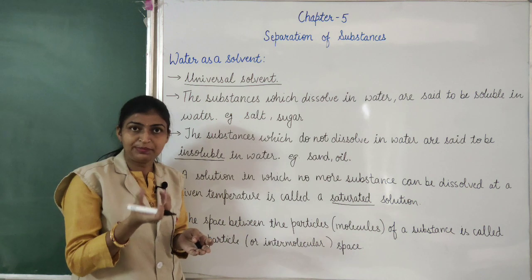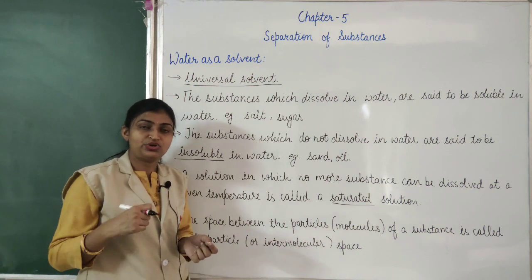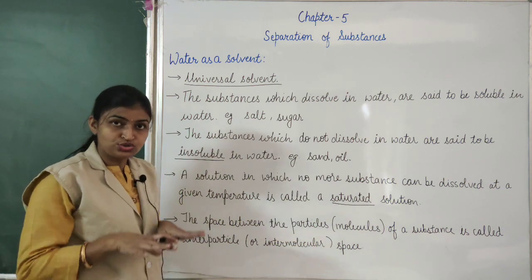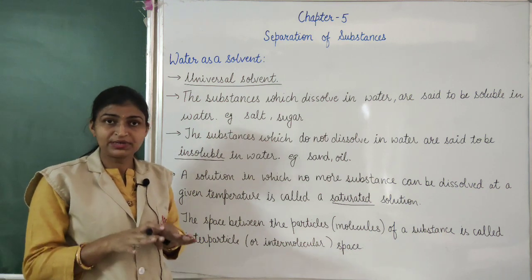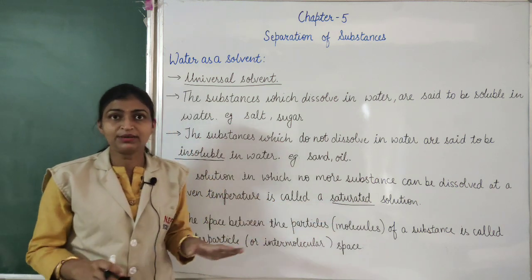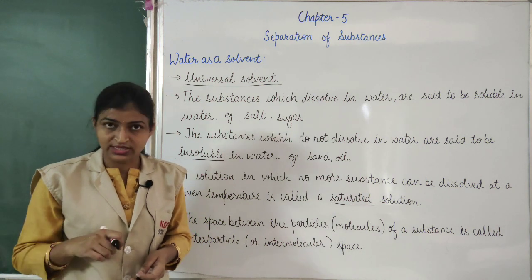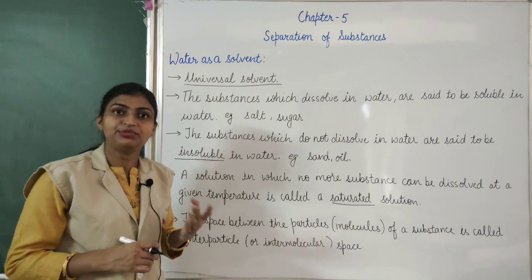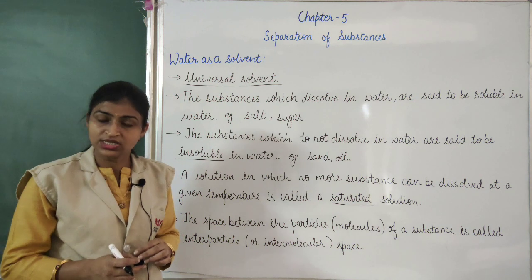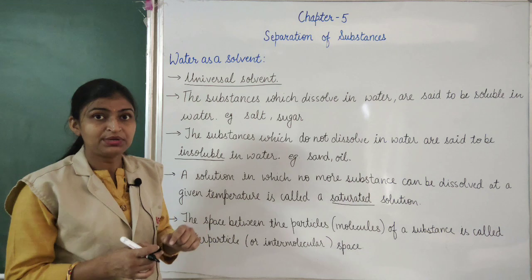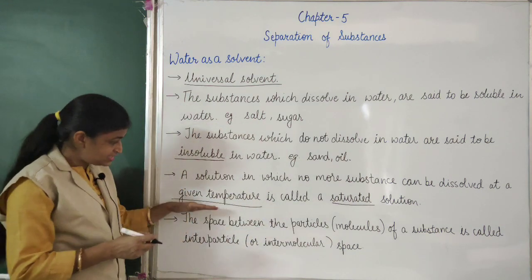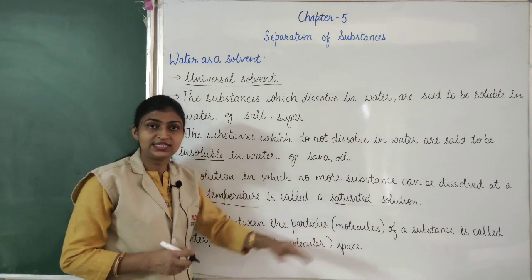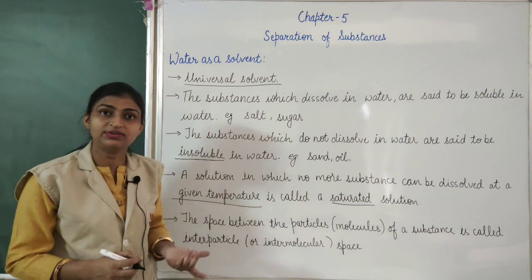A solution in which no more substance can be dissolved at a given temperature is called a saturated solution. For example, if you dissolve sugar in a beaker of water and keep adding more, a state will come when no more sugar dissolves — that solution is called saturated. We can increase this capacity by raising the temperature, so it is defined at a given temperature. If you increase the temperature, solubility increases and a little more sugar will dissolve.